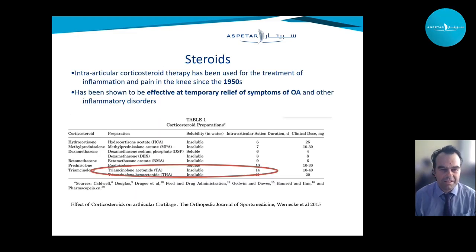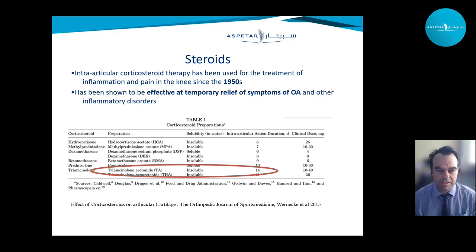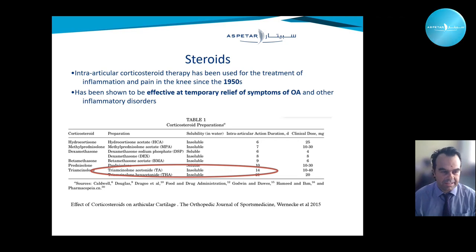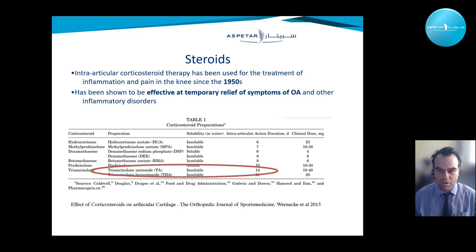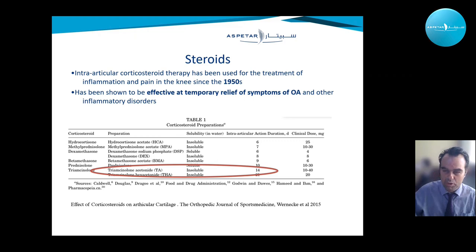Steroids have been used since the 1950s for knee inflammation and pain, and are quite effective for temporarily relieving symptoms in osteoarthritis. The most used steroid is Triamcinolone, commonly used for intraarticular injections, with a duration in the joint of around two weeks. These injections are therefore often only short term.